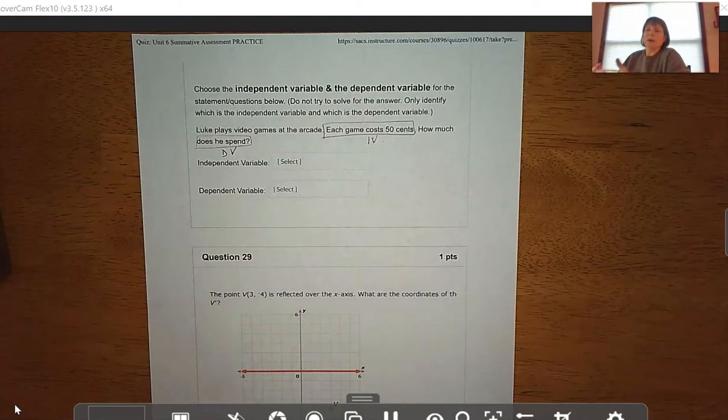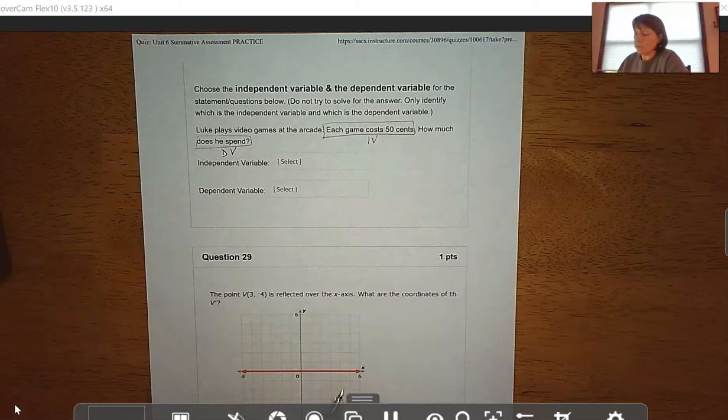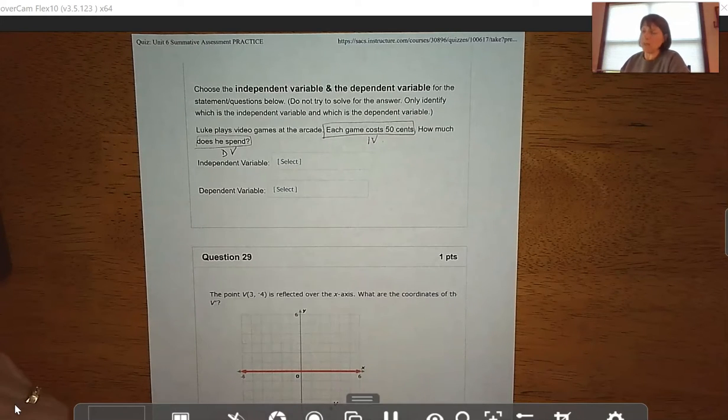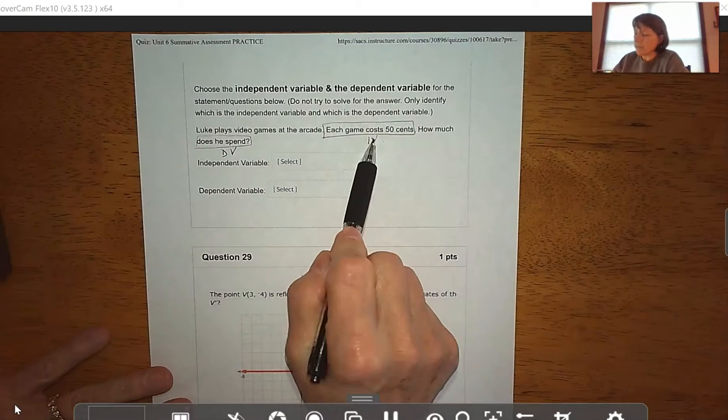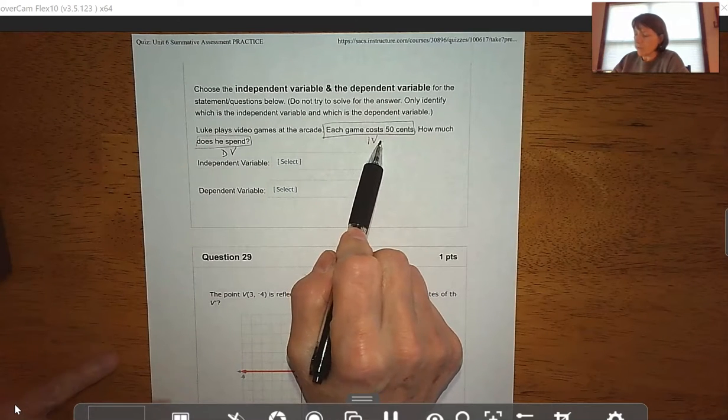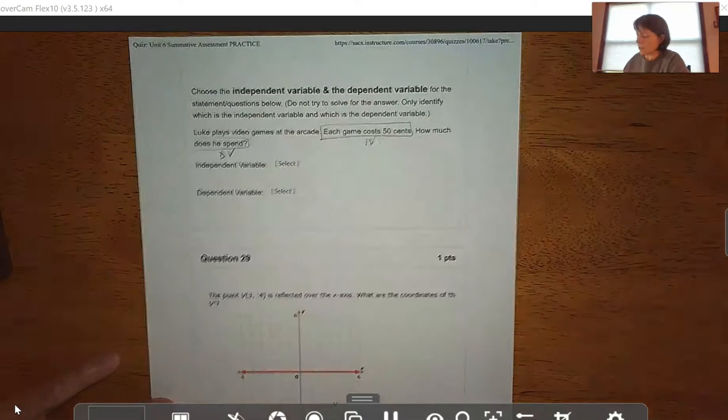Usually, the total amount you have to pay, the total of the score, those kinds of things are going to be your dependent variable, because they depend on how many baskets you make, or how many nights you stay, or how many games you play. So again, independent variable is the number of games played, dependent variable is how much Luke spent.